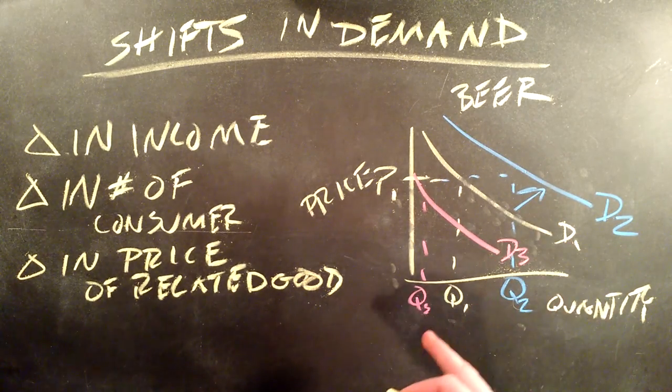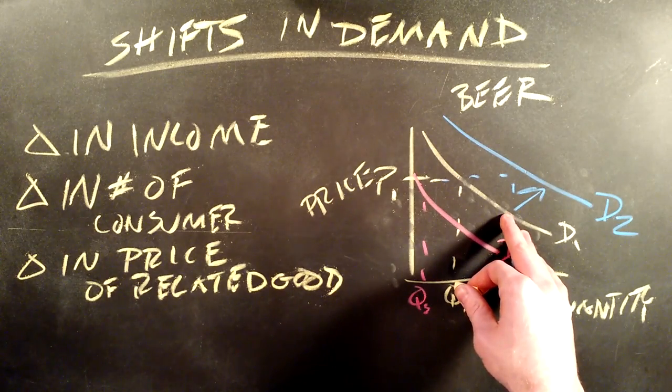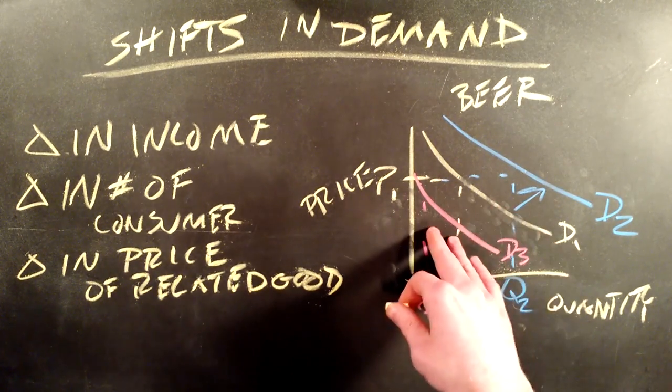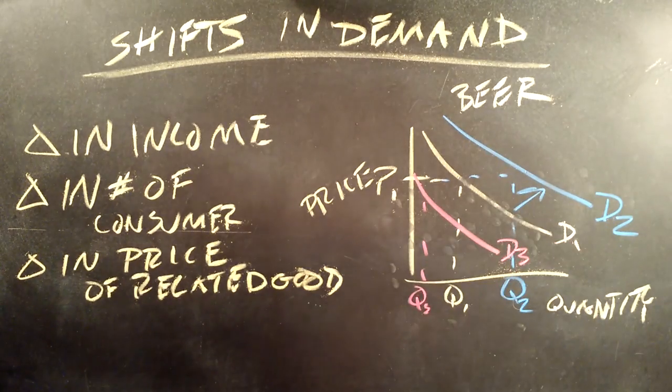But if, for example, the price of wine decreased, people might substitute away from beer and start drinking wine because it's less expensive. So you'd see a decrease in demand from D1 to D3.